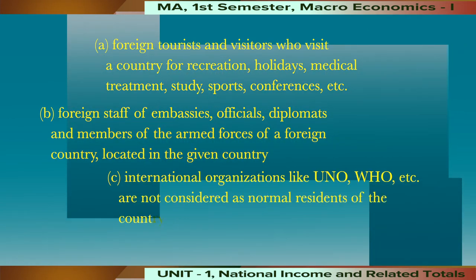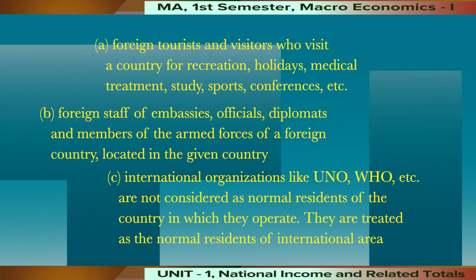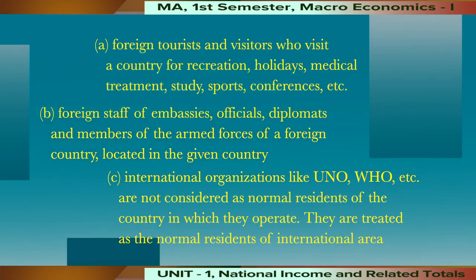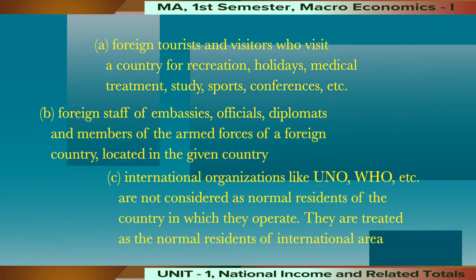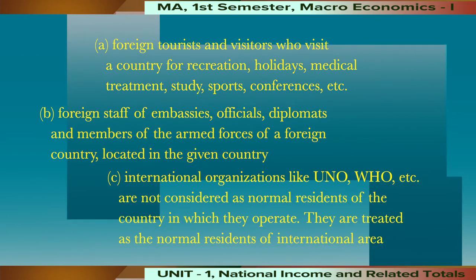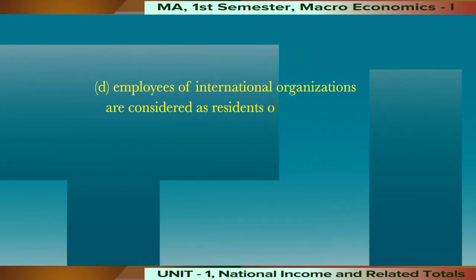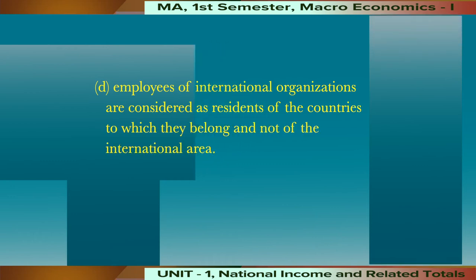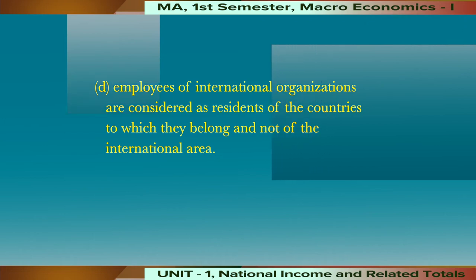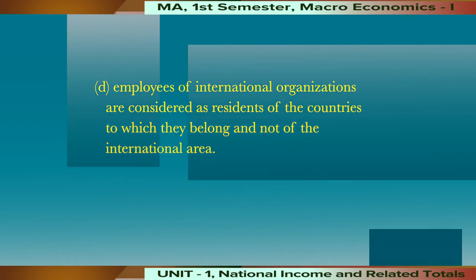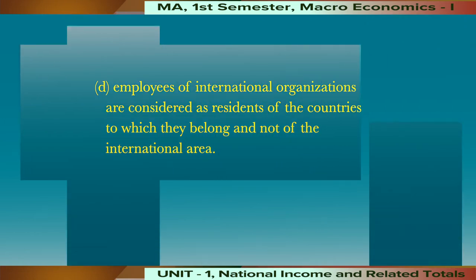Third, international organizations like UNO, WHO, etc. are not considered as normal residents of the country in which they operate; they are treated as normal residents of the international area. Fourth, employees of international organizations are considered as residents of the countries to which they belong and not of the international area.